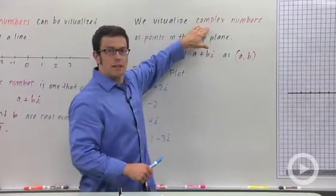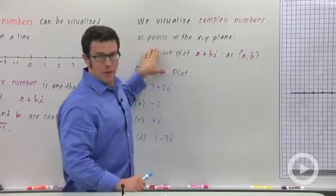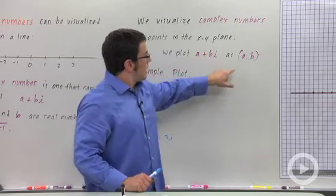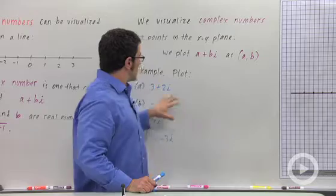How do we visualize complex numbers? We graph them on the plane, and the way we do it is we plot a plus bi as (a, b). And let me show you some examples.